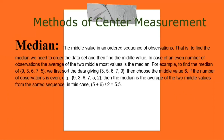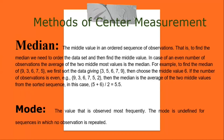If the number of observations is even — e.g., 9, 3, 6, 7, 5, 2 — then the median is the average of the two middle values from the sorted sequence; in this case (5 + 6) / 2 = 5.5. Mode: the value that is observed most frequently. The mode is undefined for sequences in which no observation is repeated.